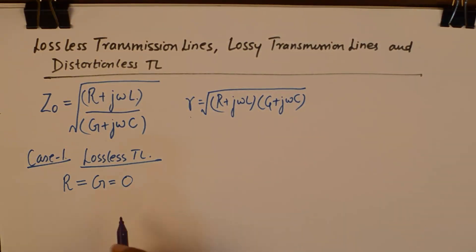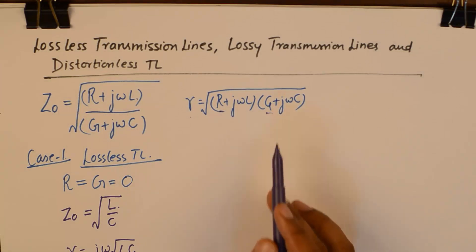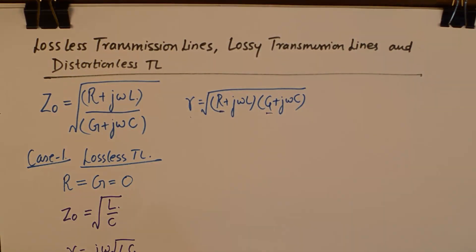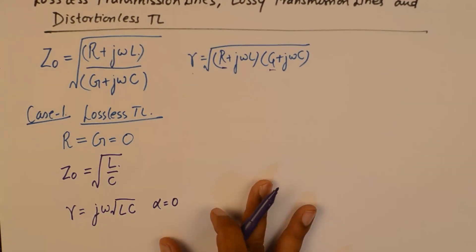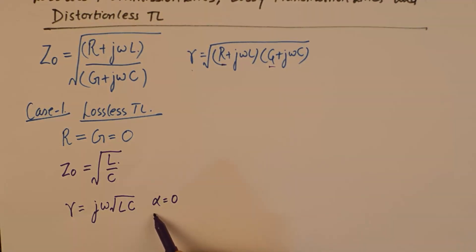This modifies our formula. If you put R and G equal to zero, we get a new formula for Z₀ which is √(L/C). Our propagation constant reduces to jω√(LC) by putting R=0 and G=0. You can see that the real part has vanished, so we're left with only the imaginary part.